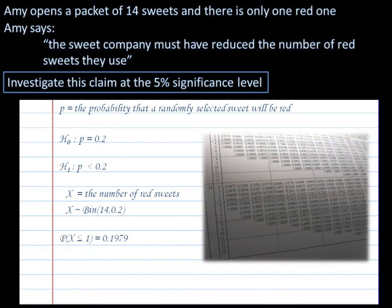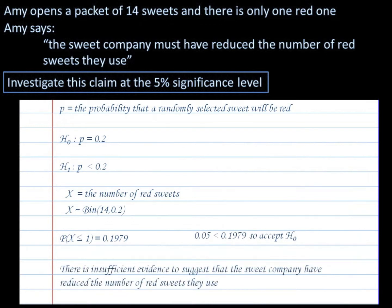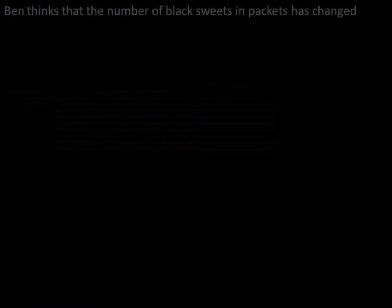The probability that X is less than or equal to 1 is 0.1979, and we can find that from the tables. Now 0.1979 is greater than 0.05, so it doesn't fall in the critical region, so we accept the null hypothesis. There's not enough evidence to suggest the sweet company have changed the number of red sweets that they use.